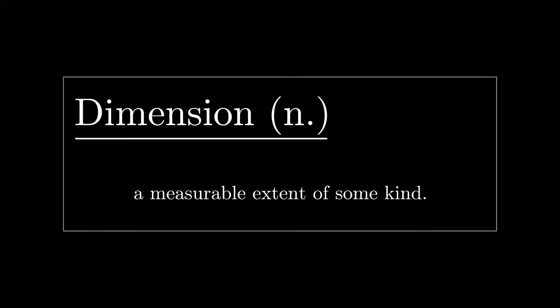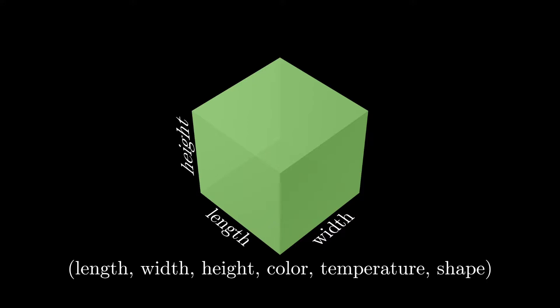Using this definition we can look at this cube and determine its dimensions. The obvious ones are the length, the width, and the height. But some other properties that we could measure, for example, would be the color, or if it was a physical object, the temperature, and definitely the shape.